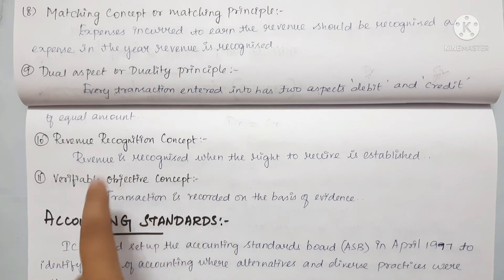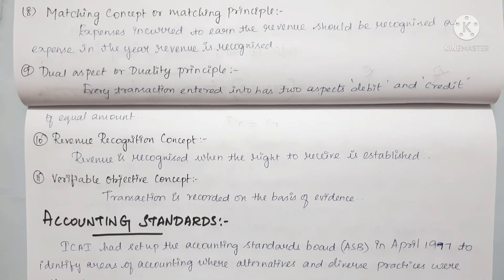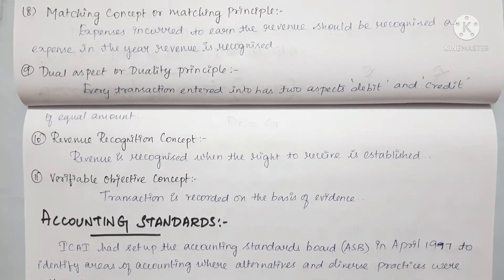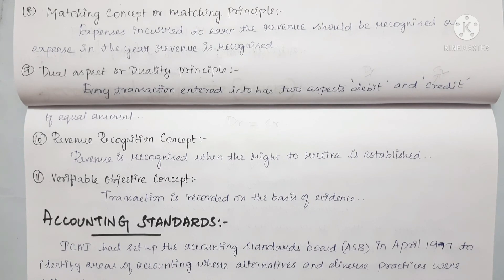The verifiable objective concept states that transactions are recorded on the basis of evidence. Evidence includes bills, invoices, receipts, and vouchers. All transactions must have supporting evidence. In the future, we can refer back to these bills and receipts to verify any transaction. If there is any debit or credit, we can verify it with bills and evidence. That is why this concept is created.